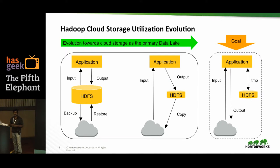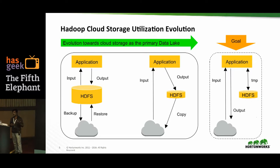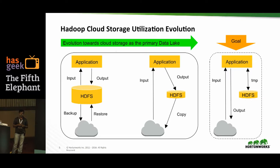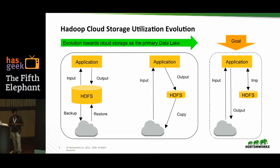This slide covers the evolution of integration patterns with cloud storage on Hadoop. The first pattern has the entire dataset in HDFS; applications read from HDFS, process the data, and write back to HDFS. At some point an administrator may decide to move cold data to cloud storage, which is a cheaper option. This can be done using tools like Hadoop DistCp, where the source URL points to HDFS and the target URL points to cloud storage.